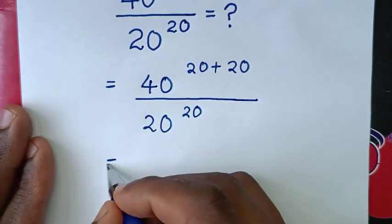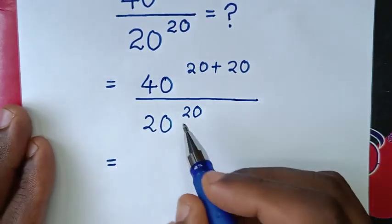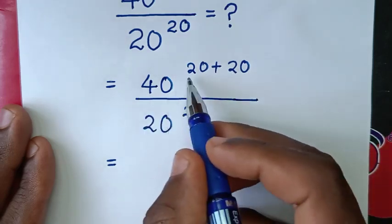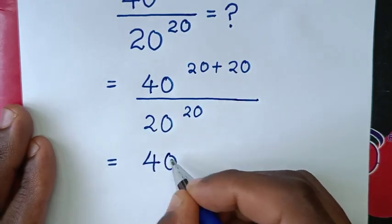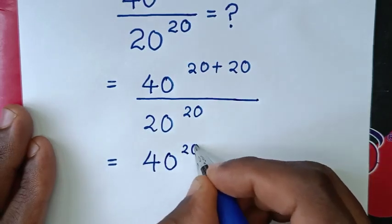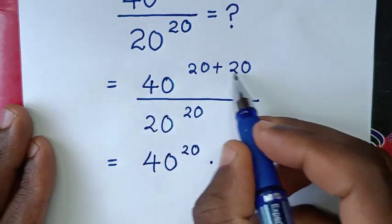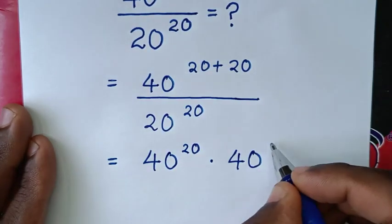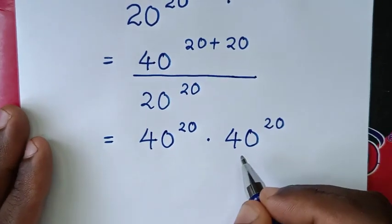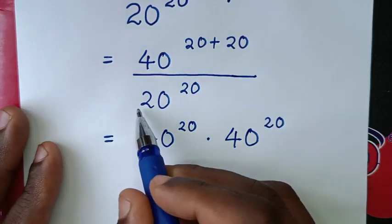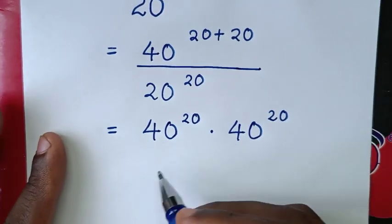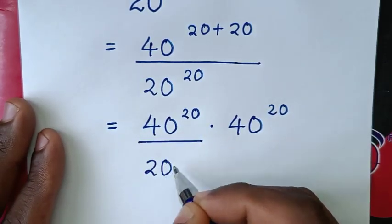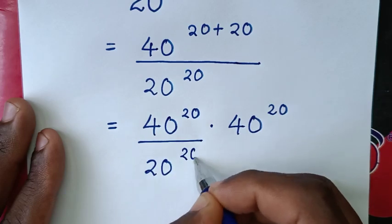Using the exponent addition rule, 40 power of (20 plus 20) becomes 40 power of 20 times 40 power of 20. We then divide by 20 power of 20, splitting that denominator under one part of the numerator — specifically over 20 power of 20.